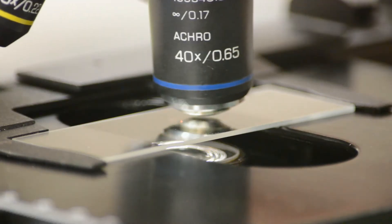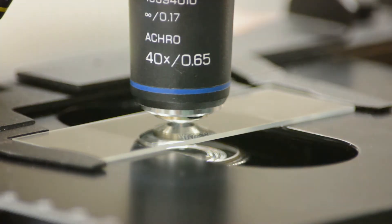Once we have it focused we want to make sure that our material is centered. We go out, we grab the turret, we rotate and bring the high dry objective which is the 40x objective in.